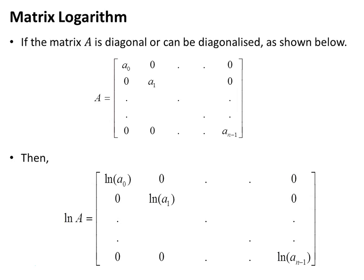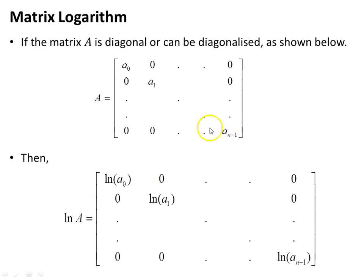Next: matrix logarithm. If we can exponentiate, why not take the logarithm? Again, if A is a diagonal matrix or can be diagonalized — which has not been covered in this video but can be looked up — then the log of it will just be the natural log of each of the diagonal elements.